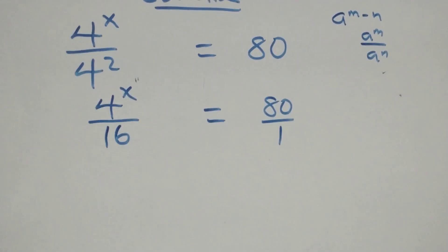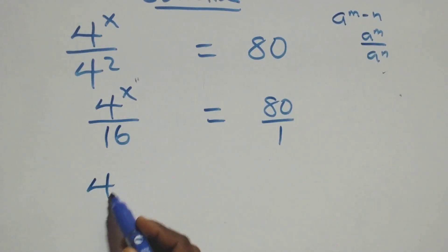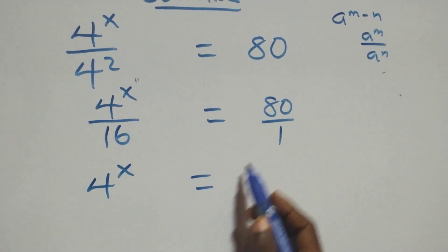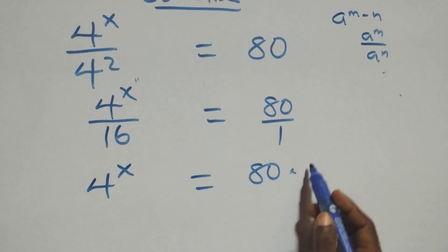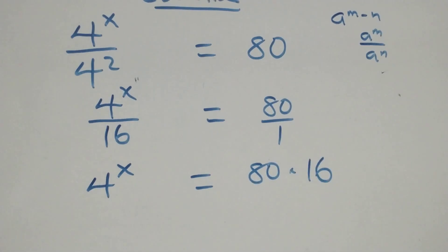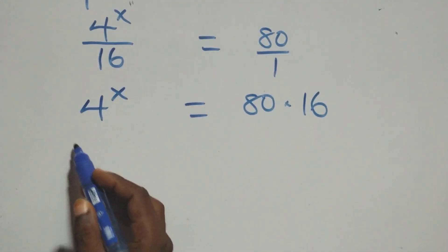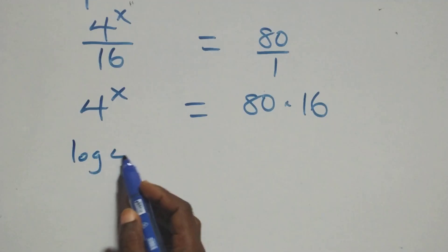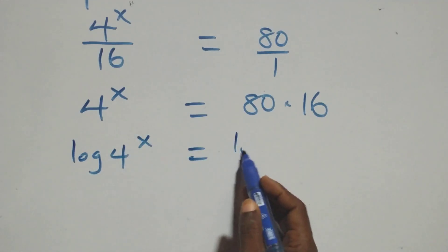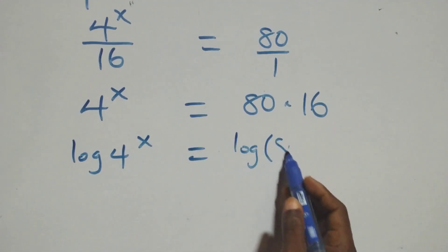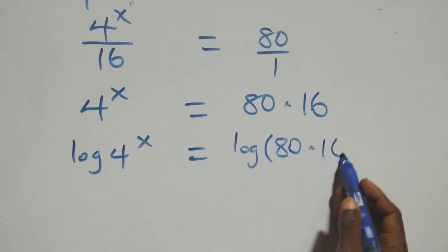The next step: we cross multiply. 4 raised to power x times 1 is the same as 4 raised to power x equals 80 times 16. Then we take the log on both sides: log of 4 raised to power x equals log of 80 times 16.